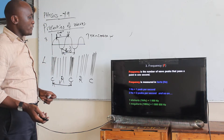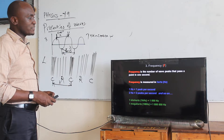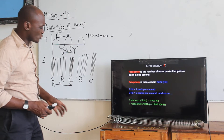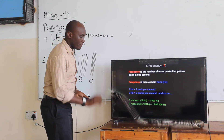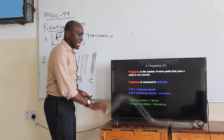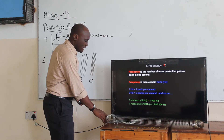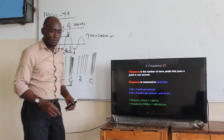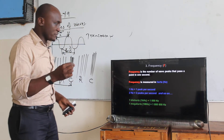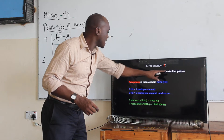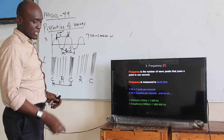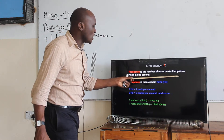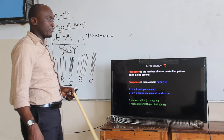There is what we call the frequency. Frequency is the number of wave peaks that pass a point in one second. For example, if I have ten complete waves passing through a point within one second, then the number of waves passing through a point in one second is what you call the frequency.